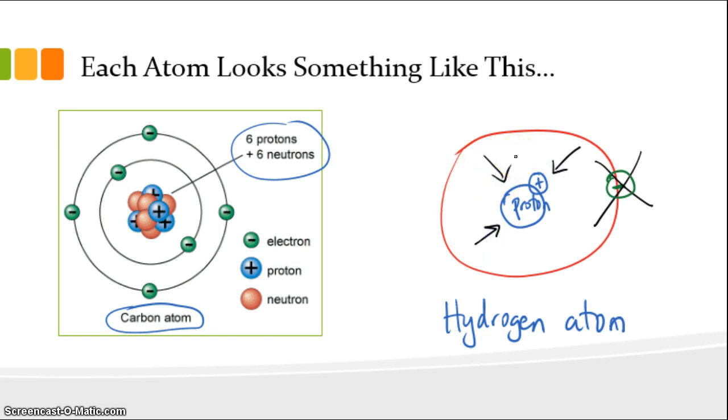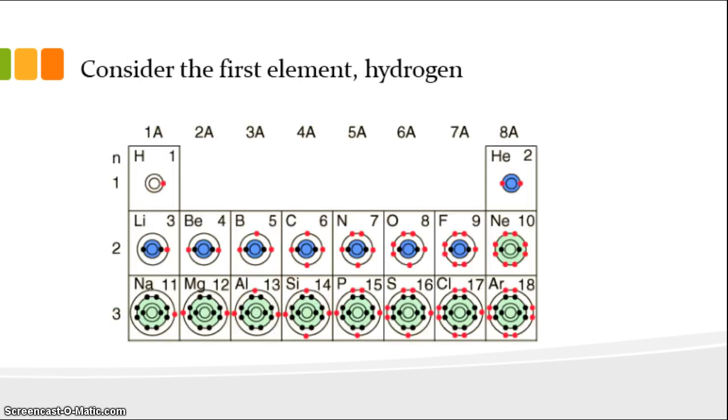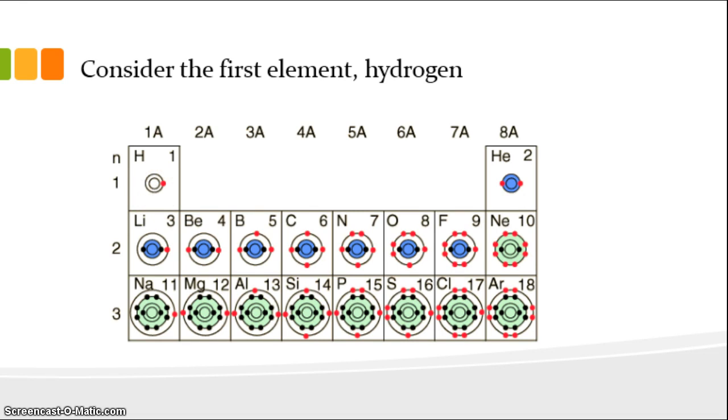When we drink an acidic beverage, it's characterized by a bunch of those protons being free and swimming around free in solution. If we have a wine that has a whole lot of H pluses - that's that proton nucleus of the hydrogen atom just floating around the wine - if there are a lot of protons floating around in the wine, we'd say that wine is fairly acidic or tart.